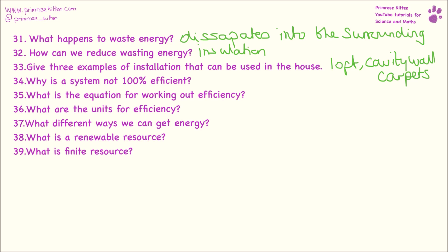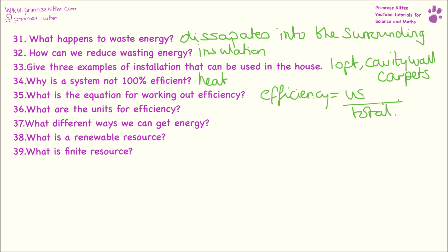Why is no system 100% efficient? Every single system will in some part generate heat, and that is going to be wasted energy — whether that's heat from electricity or heat from friction, you are going to get heat somewhere. What is the equation for working out efficiency? Efficiency equals useful over total, whether that is useful power or useful energy. It's still the same equation: useful over total.